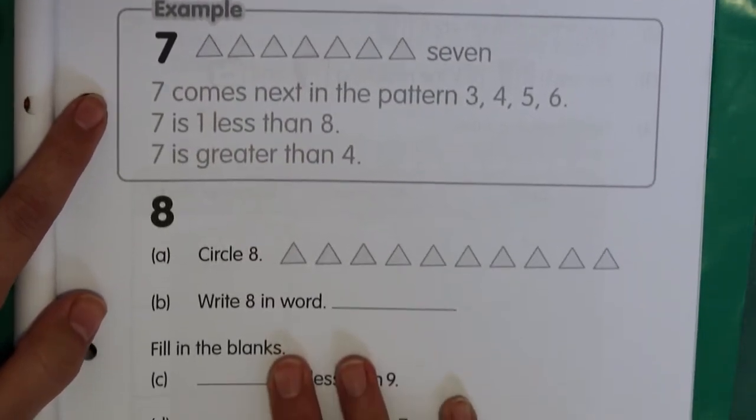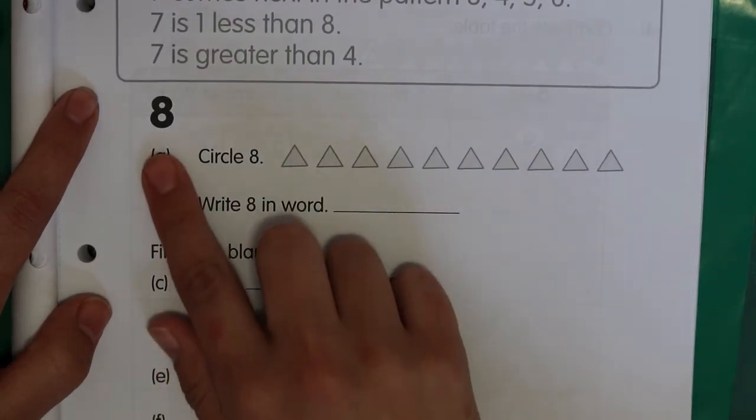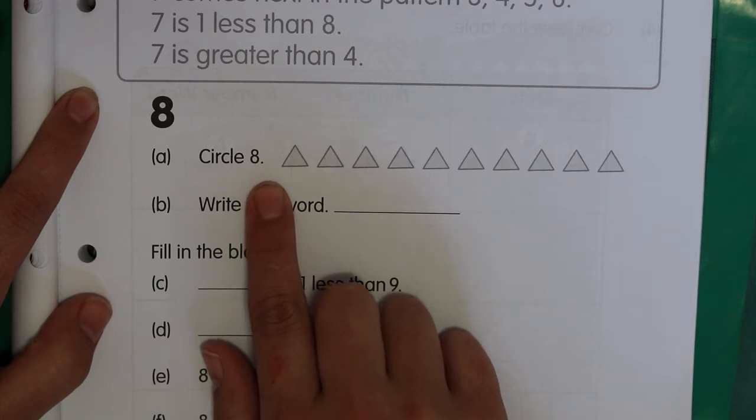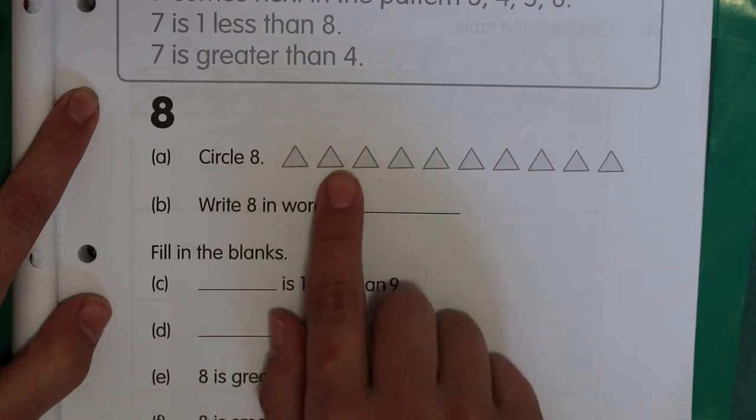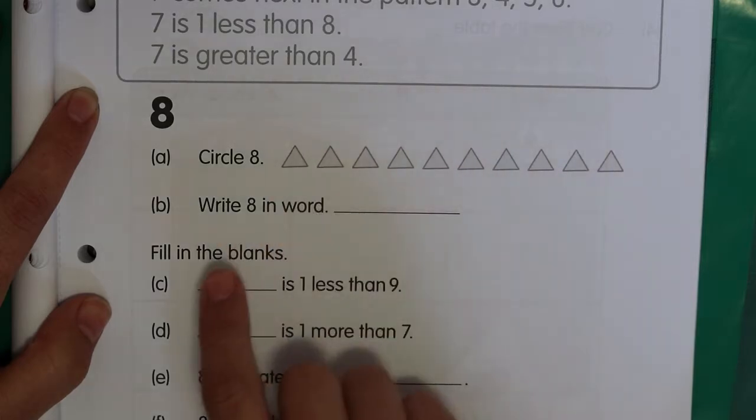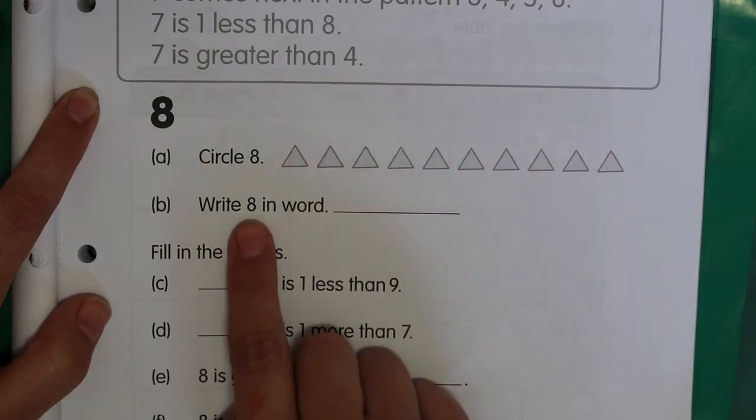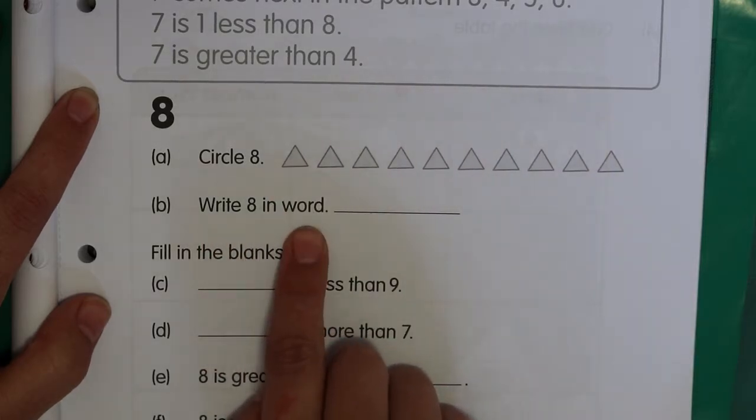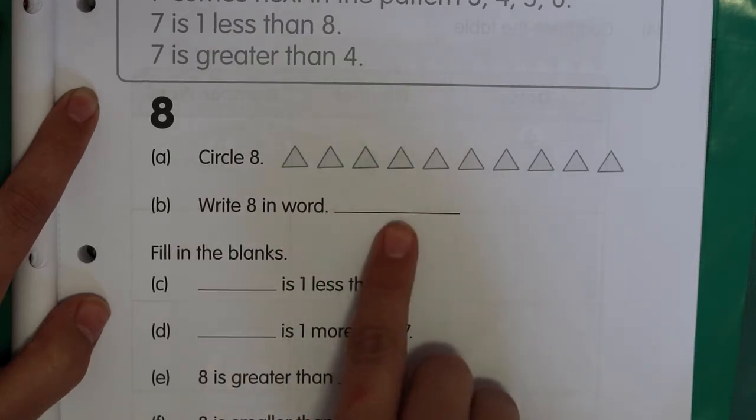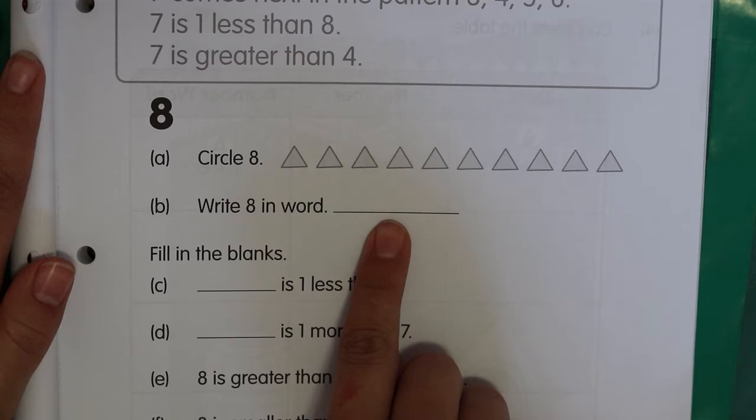Now we have to do the same with the number 8. There's the word 8. Here they want you to circle 8 triangles. So count 8, and then you just make your circle around 8 of them. Write 8 in words. Just write the word 8 over there. We've been practicing spelling it, so you should be able to spell it by yourself.